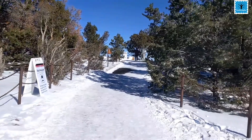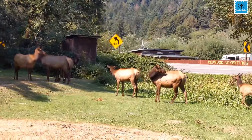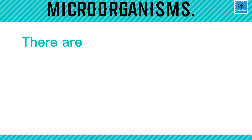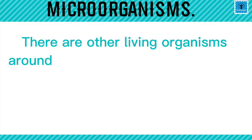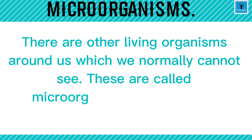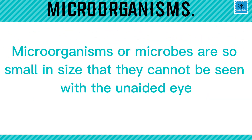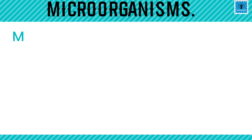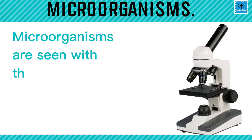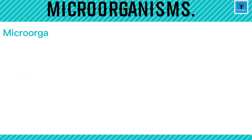We see different kinds of plants and animals around us. However, there are other living organisms around us which we normally cannot see. These are called microorganisms or microbes. Microorganisms are too small and are not visible with the naked eyes. They can be seen with the help of a device called a microscope, which is why they are called microorganisms.